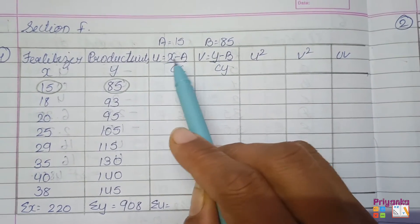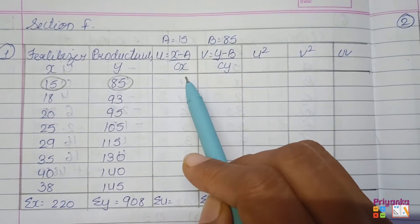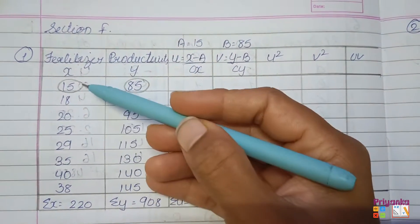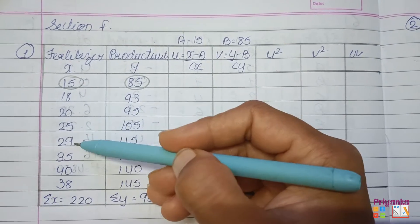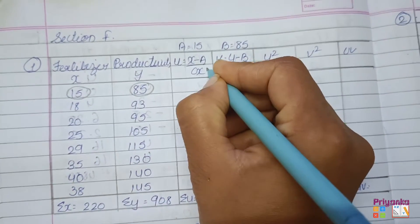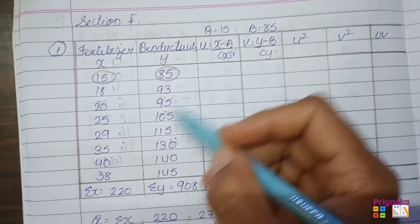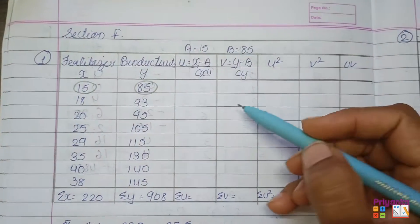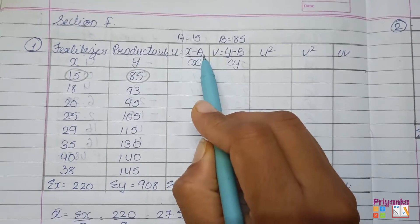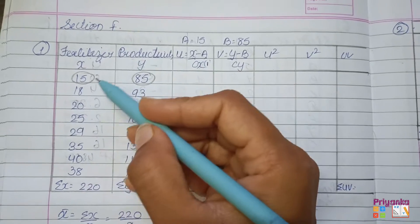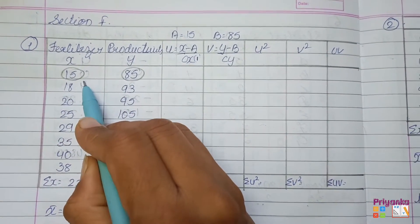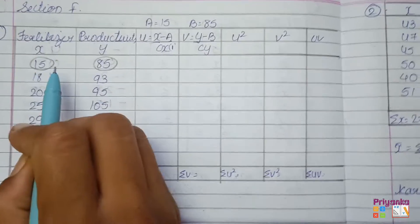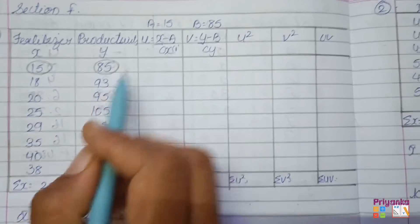For UV, first we compute X minus assumed A, divided by CX. Checking the table, no common multiplier appears across the X values, so CX will be 1. For the assumed value A, I look at the whole table and 15 is the smallest observation, so I am going to take A as 15.